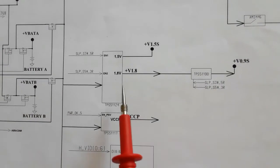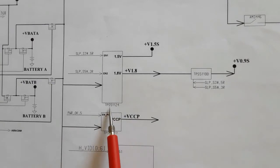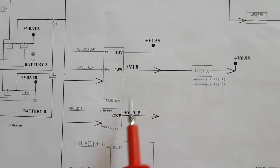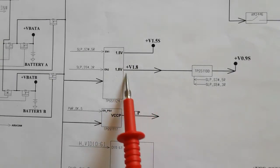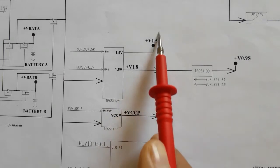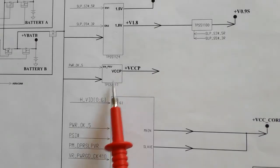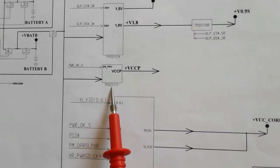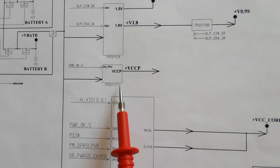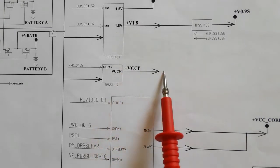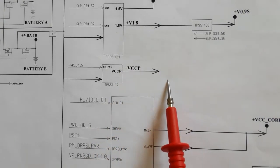Here we have TPE51124 that generates 1.8V and 1.5V. And this is the VCCP power management IC — it generates plus VCCP for the processor and the chips.